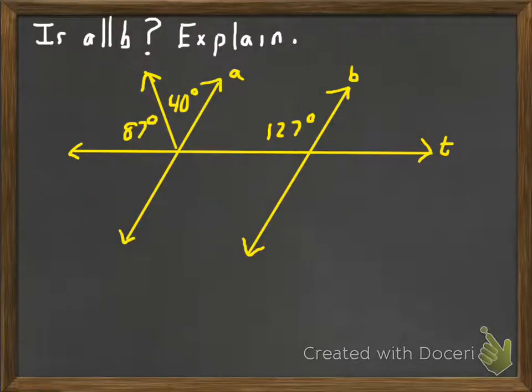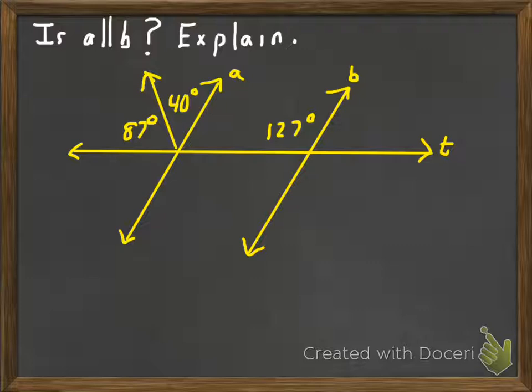I've given you a picture where I want us to determine if lines A and B are parallel. I'd like you to see if you can find any corresponding angles or alternate interior angles that have the relationship they ought to have if the lines were parallel. If they do have that, we'll say they are parallel and explain why. Look it over for a couple of moments.